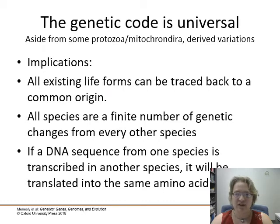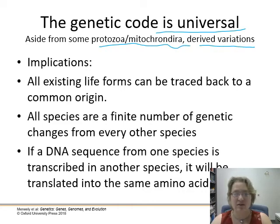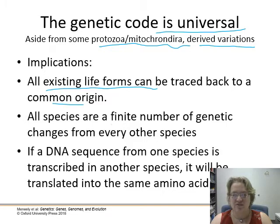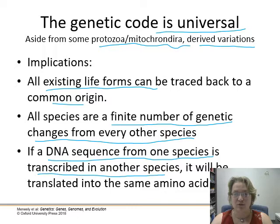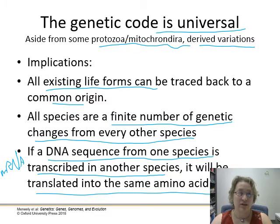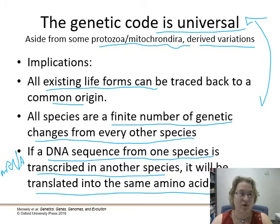The big takeaway is that the genetic code is universal, aside from some protozoan mitochondria which seem to be derived variations from something way back when. The implications are that all existing life forms can be traced back to a common origin — LUCA. All species are a finite number of genetic changes away from every other species. Thus, if a DNA sequence from one species is transcribed in another species and made into mRNA, it will be translated into the same amino acid sequence. You can blame the universal genetic code for every cold you get, because viruses can put random mRNA into you and your ribosomes will go right ahead and produce viral proteins.